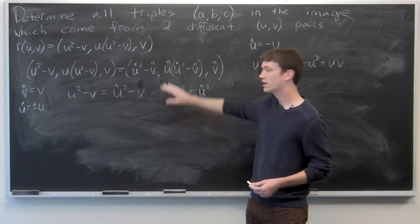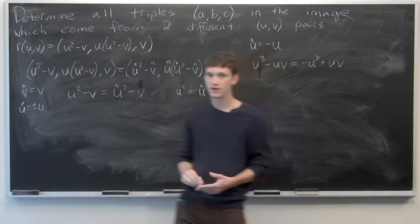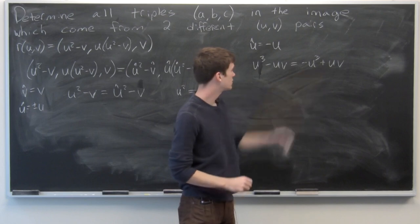And then we're letting u-hat equal to negative u. So when we multiply this out, we get a negative u-cubed plus u-v, as shown here.